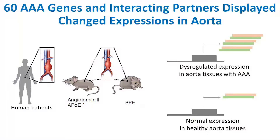This method found 60 genes that appear to be involved in this disease. When we examined these genes and their interacting partners in more detail, we found that they are dysregulated in people who have AAA. We also found that they are dysregulated in mouse models of the disease, suggesting that they really do play a role in AAA.